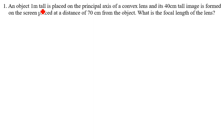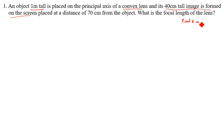An object one meter tall is placed on the principal axis of a convex lens, and its 40 centimeter tall image is formed on the screen. Image formed on the screen means it is real and inverted. The screen is placed at a distance of 70 centimeters from the object. We need to find the focal length of the lens.